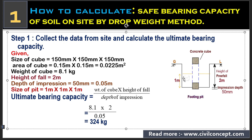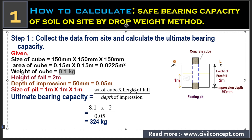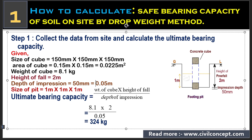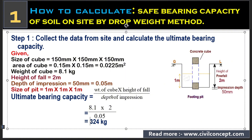The formula for ultimate bearing capacity is: weight of cube multiplied by height of fall, divided by depth of impression. Substituting: 8.1 kg × 2 m ÷ 0.05 m gives us an ultimate bearing capacity of 324 kg.